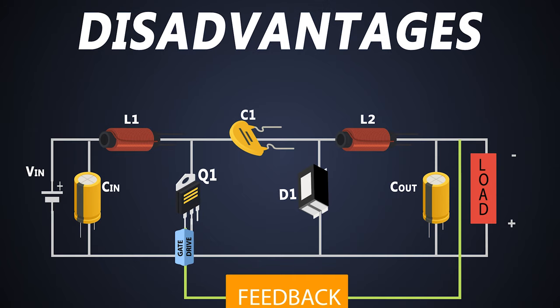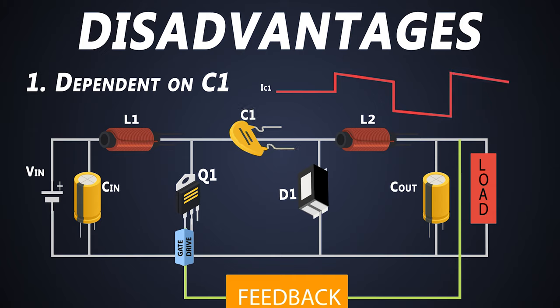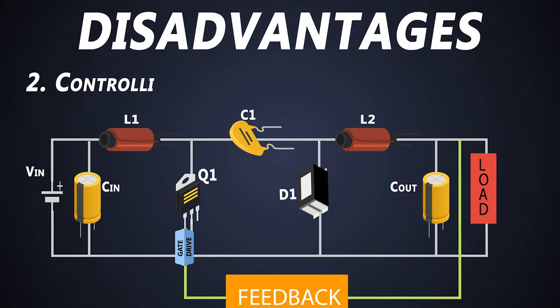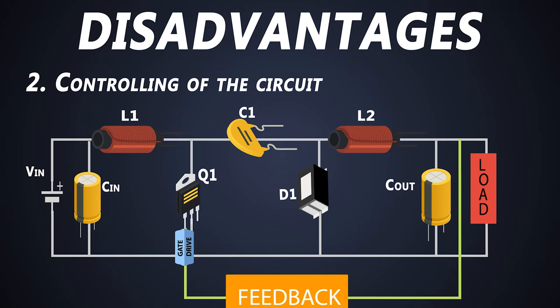The biggest disadvantage of this Ćuk converter is that it is very dependent on capacitor C1. All of the current flowing from the input to output has to go through this capacitor, and this capacitor must be non-polarized because the voltage across it reverses with each half cycle. In high power applications, we generally need high value capacitance, so we cannot use the Ćuk converter for high powers. Additionally, the design of the control loop should be very stringent to achieve stable operation, because there are 4 reactive components which might create resonance in the circuit, making control very difficult.